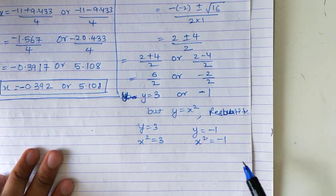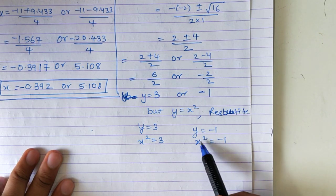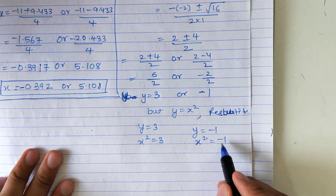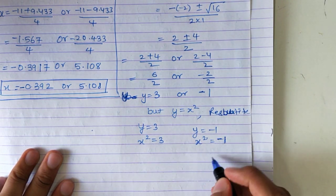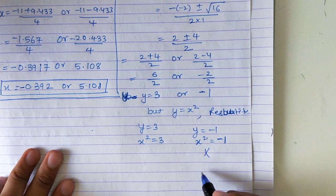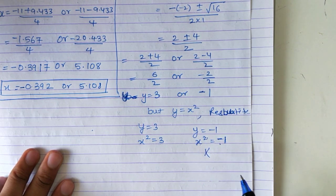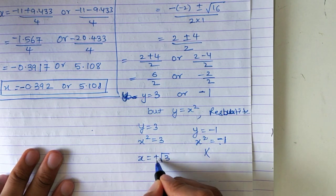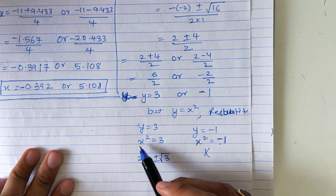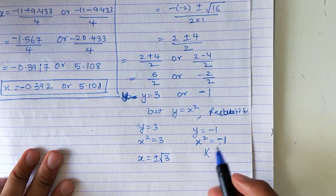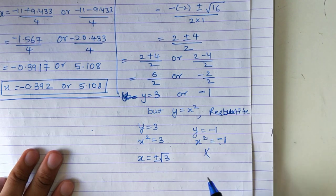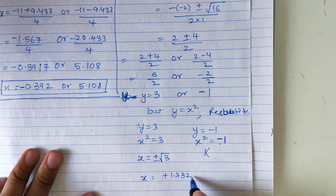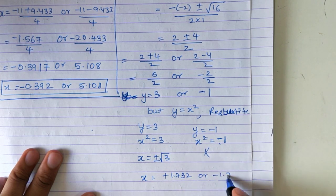The square of any number cannot be minus 1 — when you square any number it becomes positive, so x squared equals minus 1 cannot be solved further. But x squared equals 3 can be solved: taking square root on both sides gives x equals plus minus root 3, which is plus minus 1.732. Don't forget to do this resubstitution step.